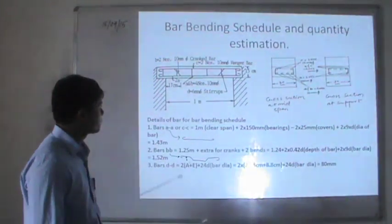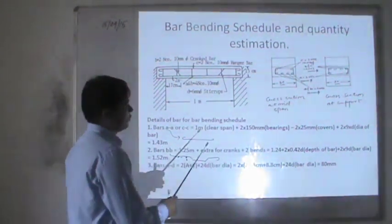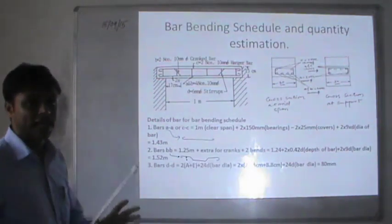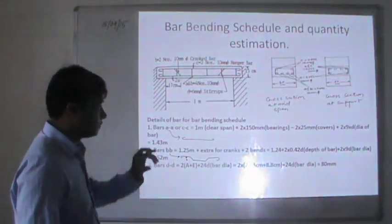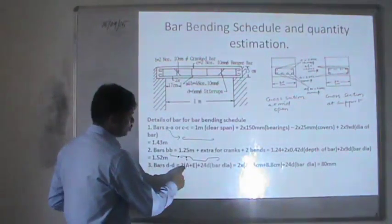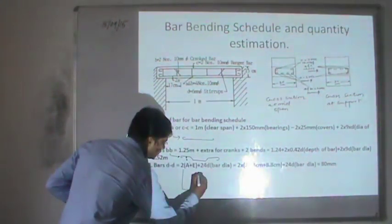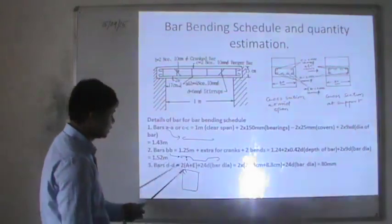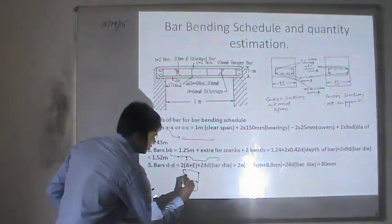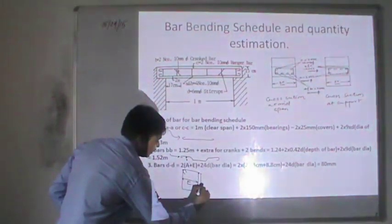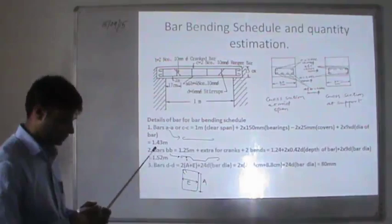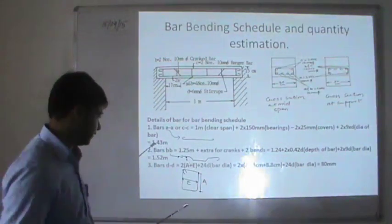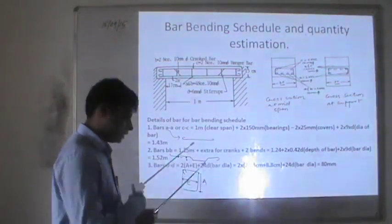The third bar is bar D, the stirrup, which is a 6 mm diameter bar. The total length of the stirrup is calculated as 2 × (A + E) + 24D, where A and E are the inner dimensions of the stirrup. A is the inner width and E is the inner depth.